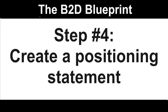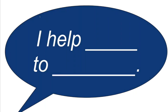Step number four is to create a positioning statement. Remember, the formula is: 'I help this group of doctors to achieve this certain outcome.' By the time you actually get your positioning statement, you're going to wonder what all the fuss was about. But the reason you want a great positioning statement is so that doctors can remember it. When they're in the doctor's dining room or surgeon's lounge, they can tell other doctors about what it is that you do — that's the main reason to develop this.